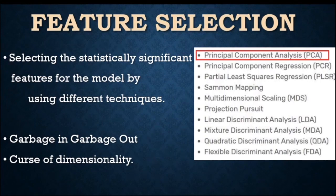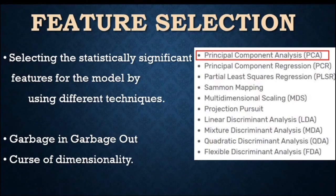There's a well-known principle: garbage in, garbage out. If we feed garbage to the model, the model will output garbage. We have to give the best features so the model gives the best accuracy and performance. Another concept is the curse of dimensionality — it states that whenever we have a large number of features, model performance will always degrade, so we must select statistically significant features.